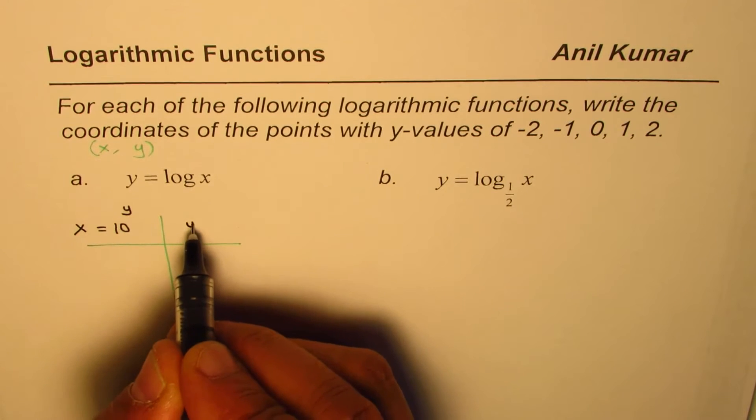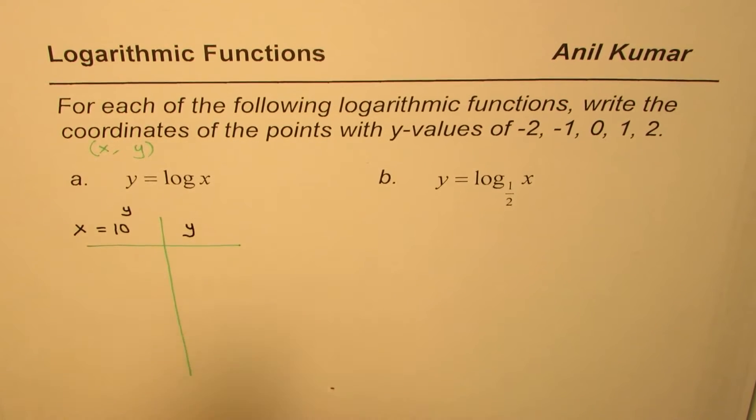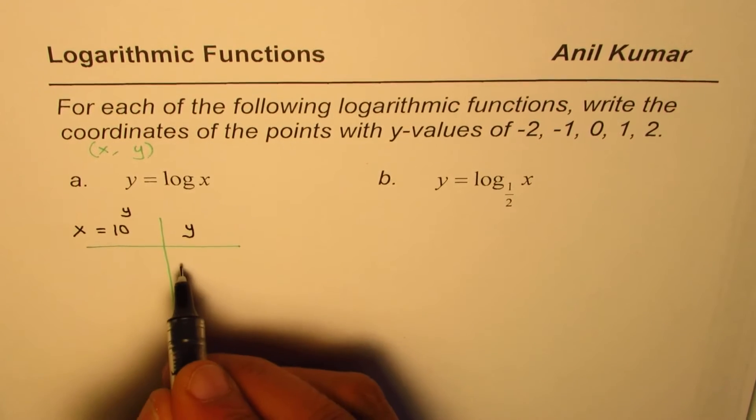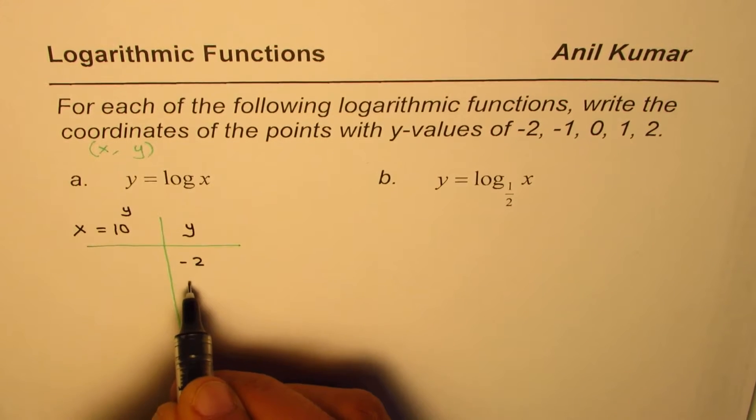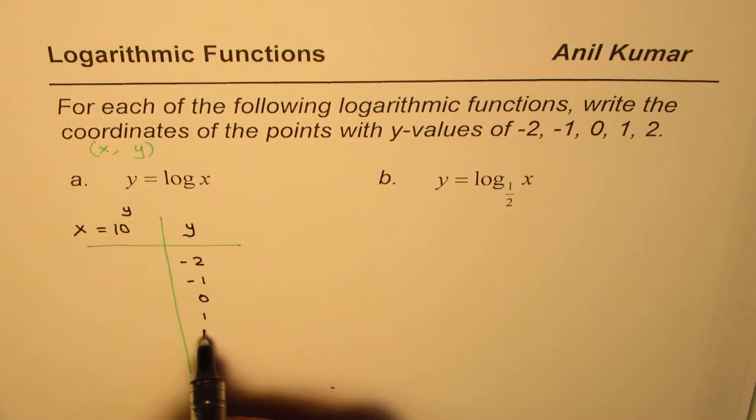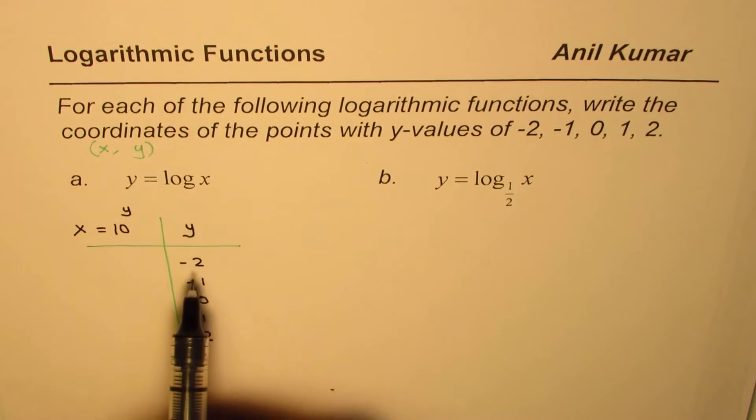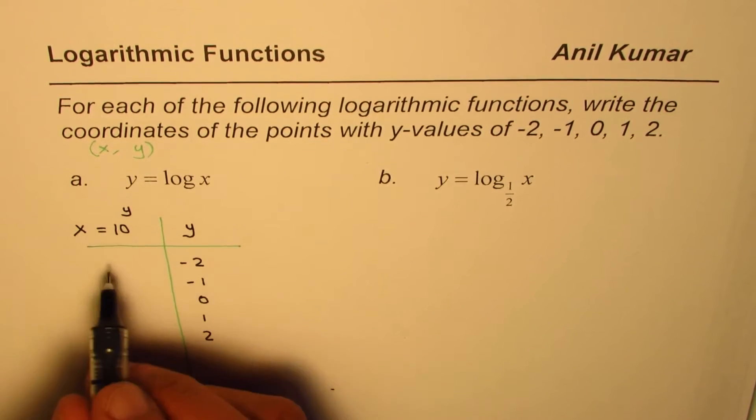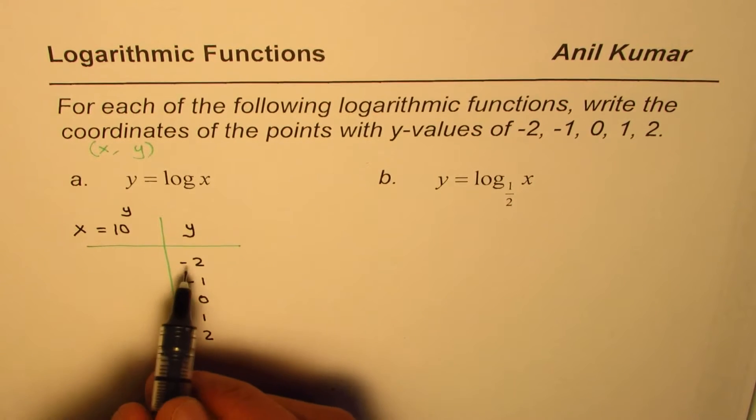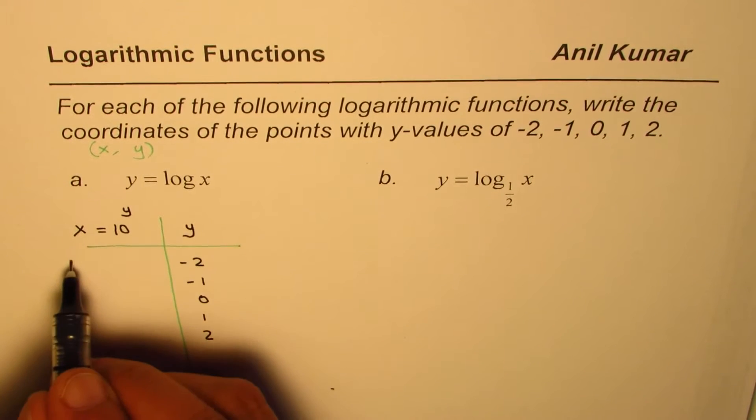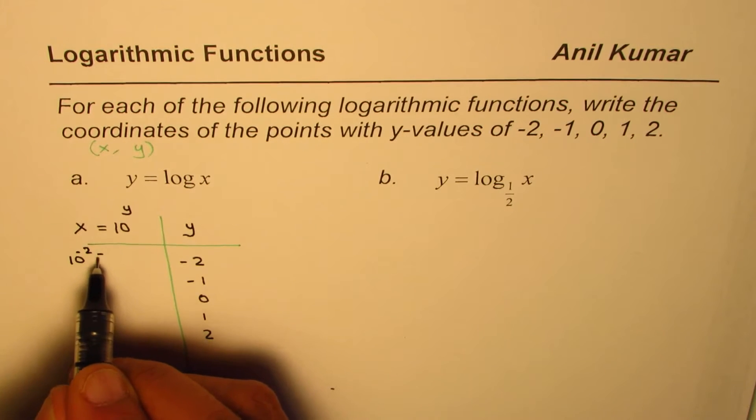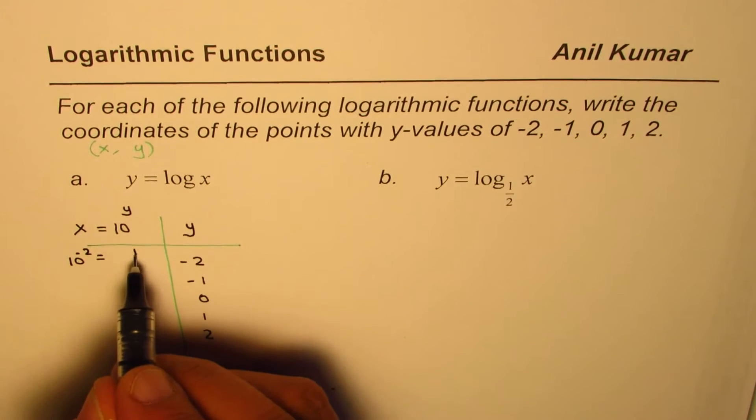So, we will write y values here. We are given these y values: minus 2, minus 1, 0, 1, and 2. We can calculate the x values by putting them as exponents. The first one, when y is minus 2, we get 10 to the power of minus 2, which is 1 over 100.